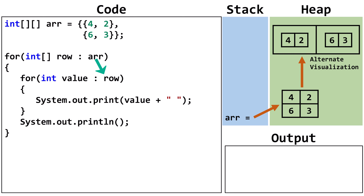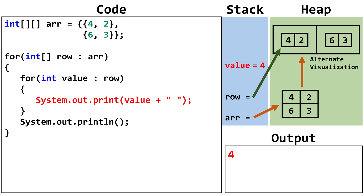For the inner loop, we are traversing each of the inner 1D arrays of int. Our temp variable is an int, so it can hold the int values. Let's trace the code. First, we create the row variable and have it point at the element at index 0. Currently, row is pointing at the 1D array at index 0. We could also say that row is pointing at row 0 in the 2D array. In the inner loop, we create an int variable value and initialize it with a copy of the element at index 0 in row 0. We output value, which is 4. For our second time through the inner loop, value is set to a copy of the element at index 1 in row 0. We output value, which is 2. We've traversed the entirety of row 0, so we terminate the inner loop.